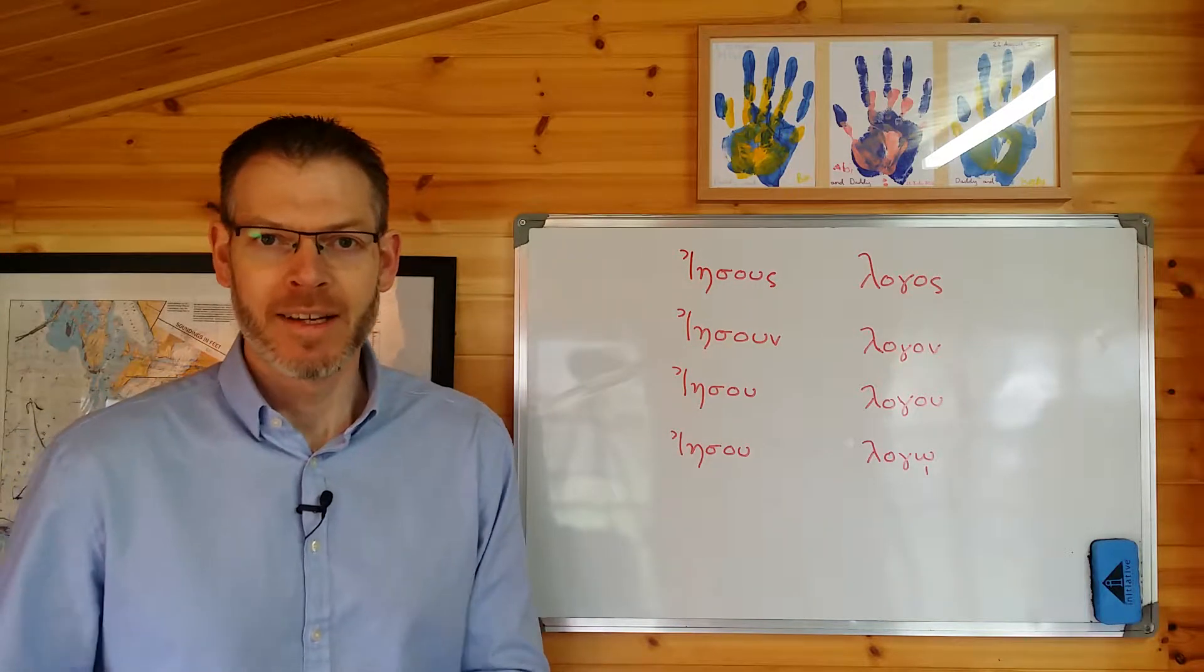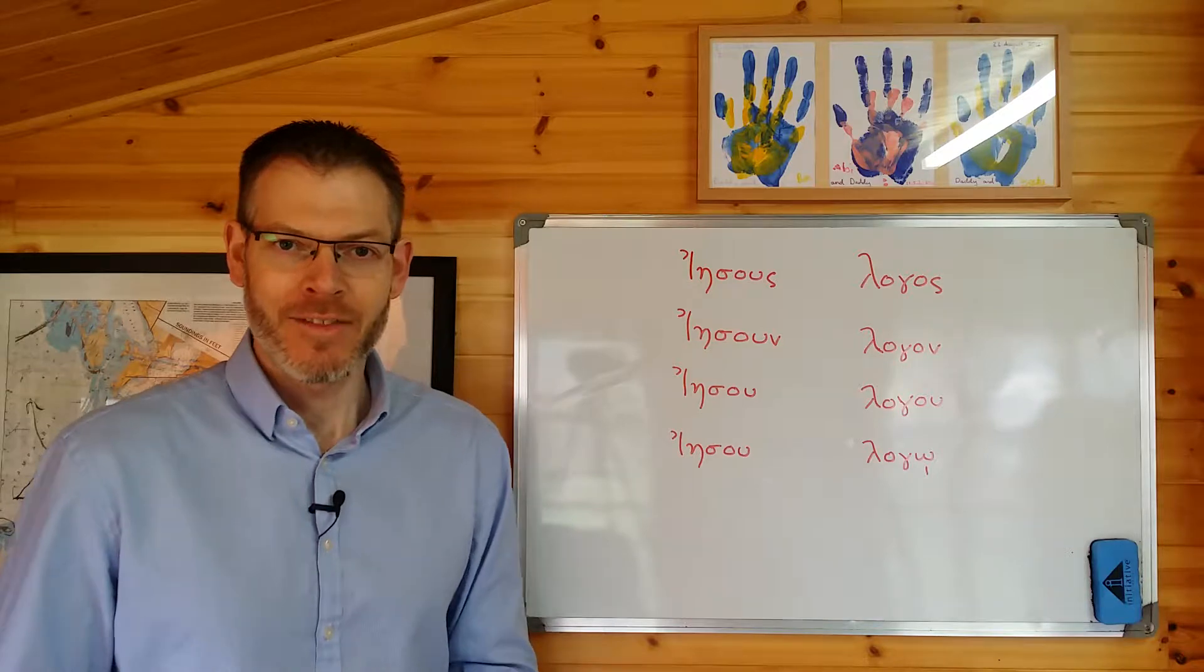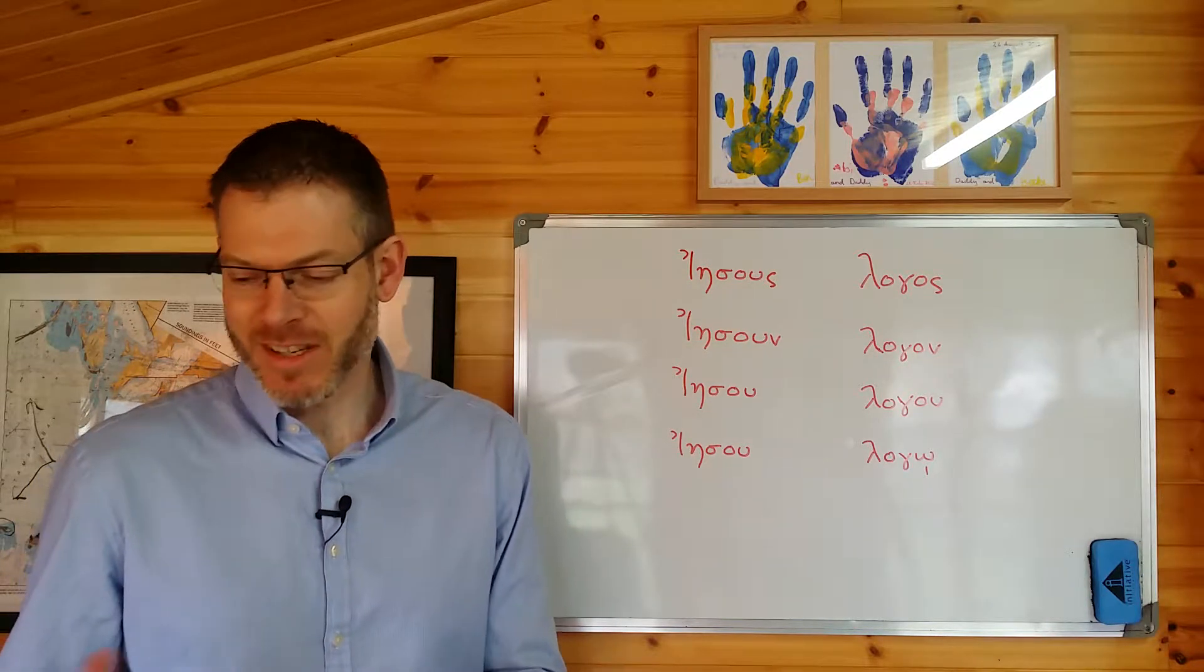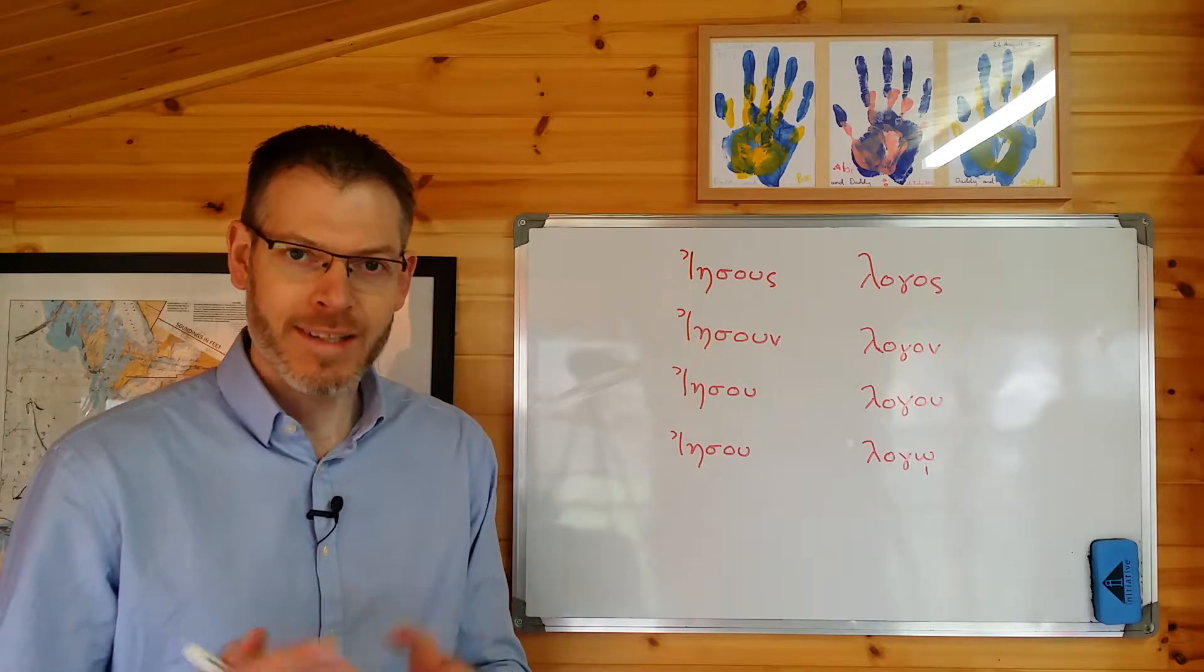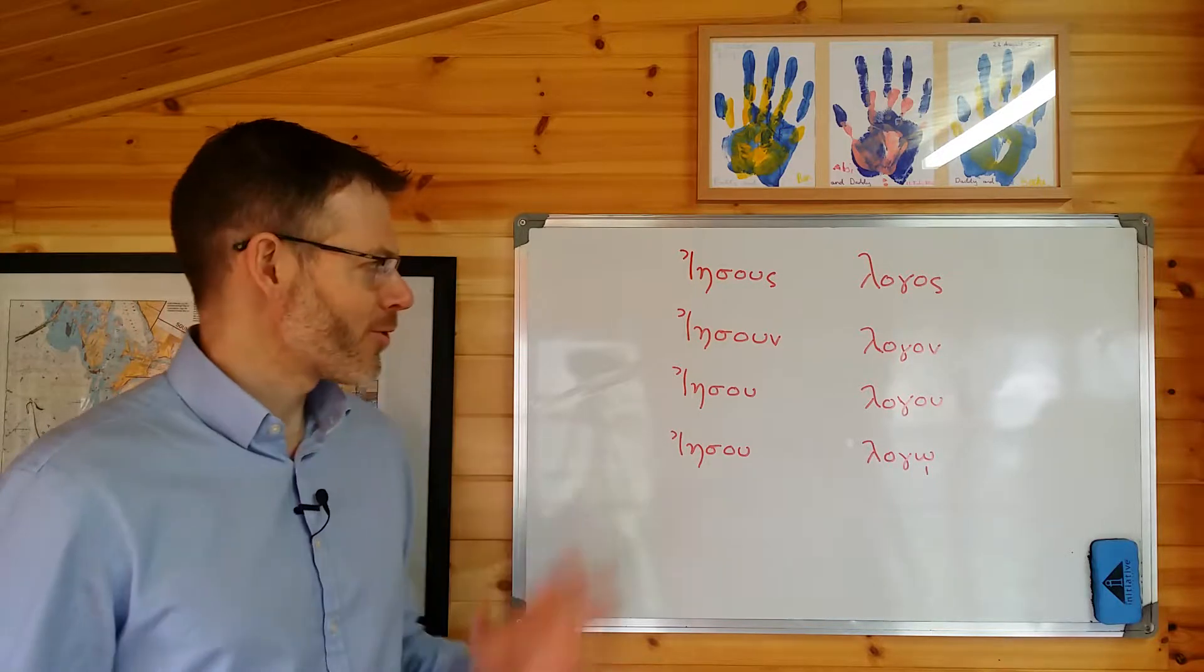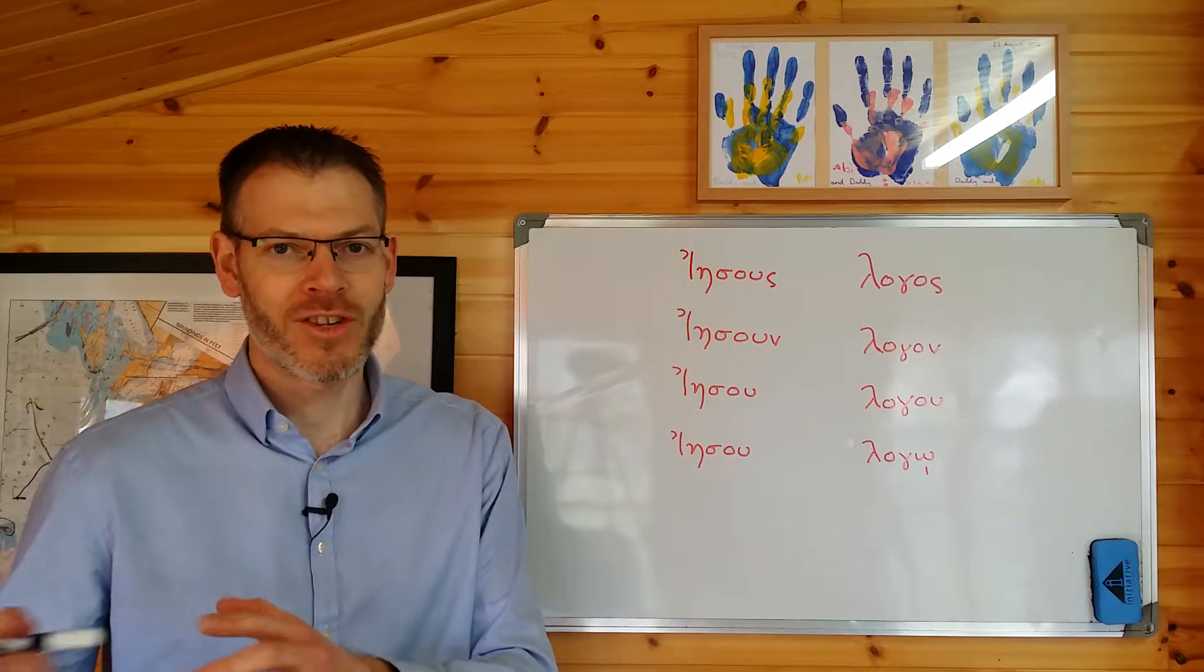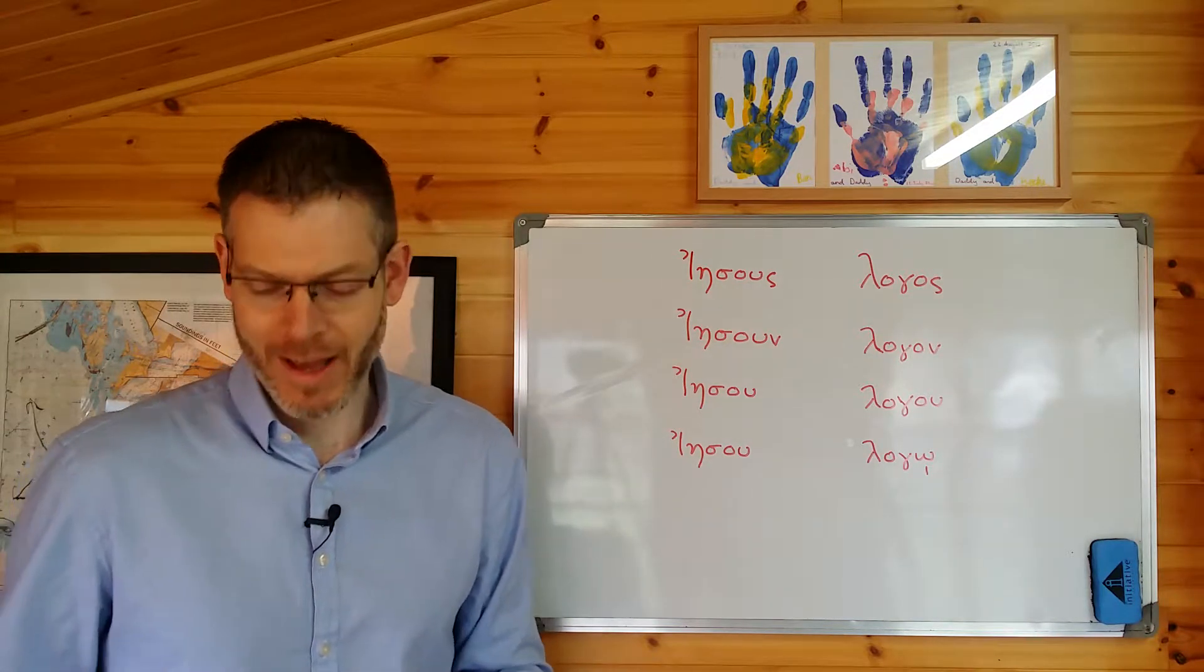Hi everybody, welcome back. Today we're looking at Jeremy Duff's Elements of New Testament Greek, section 3.5, the name Iesus, the name of our Lord. And this is a very simple section, just to highlight that there are a couple of quirks about the grammatical form of the name Iesus, and it's also an opportunity to think about a couple of things which will help you in the future when you're recognizing nouns and other words which are a little bit unfamiliar.